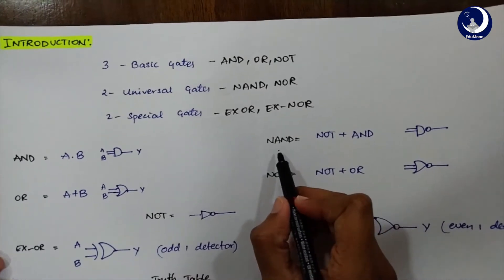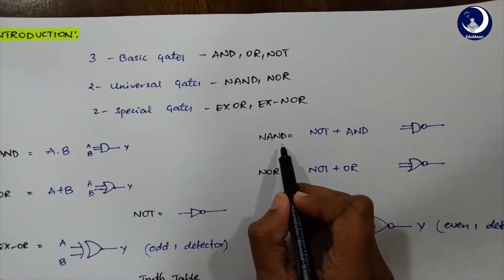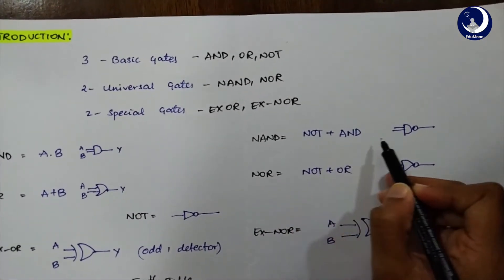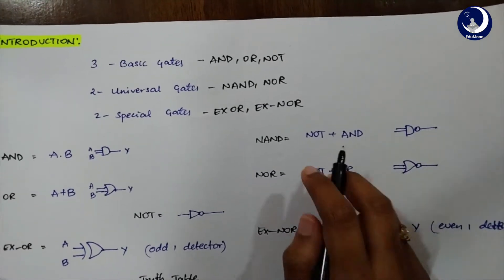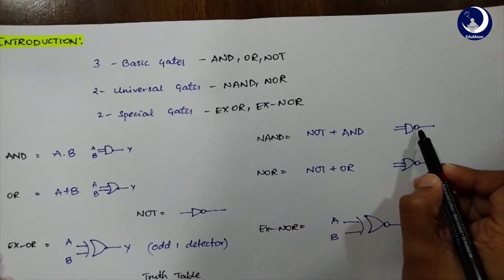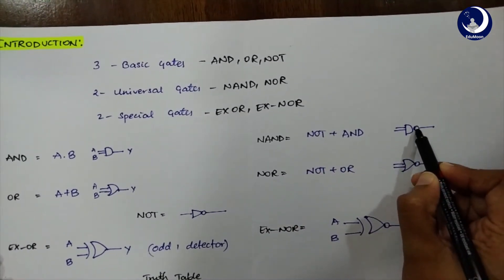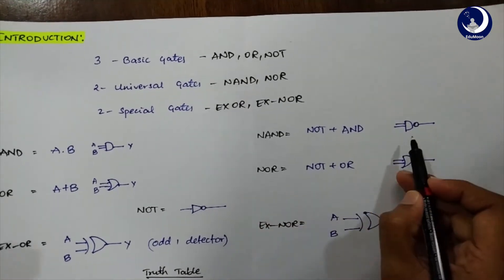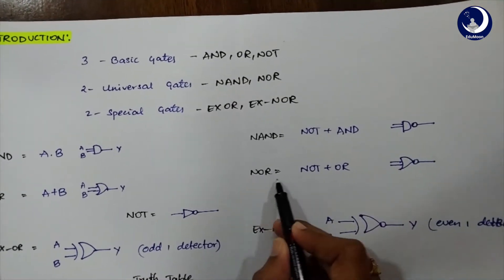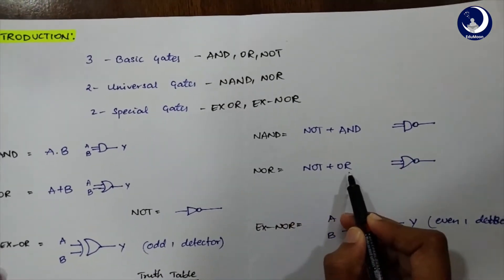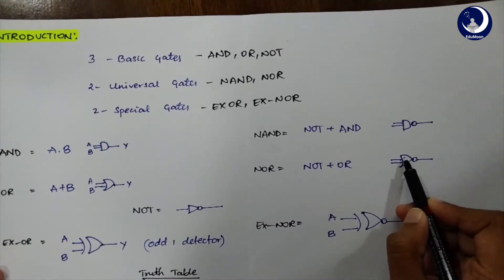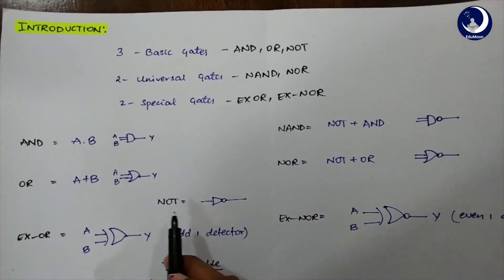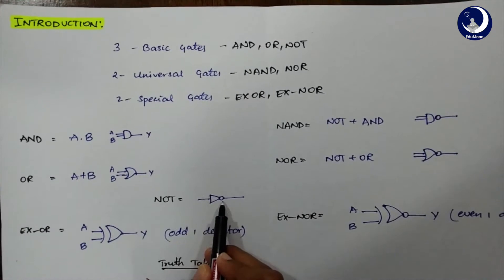Now let's look on to the NAND gate. NAND gate is simply NOT AND. So how do we place a NOT for this one? We just place a bubble. This bubble states the negation of the AND gate. Similarly, NOR gate means NOT OR. So we are just placing a bubble on the OR gate. That's what NOR gate is all about — just placing a bubble.